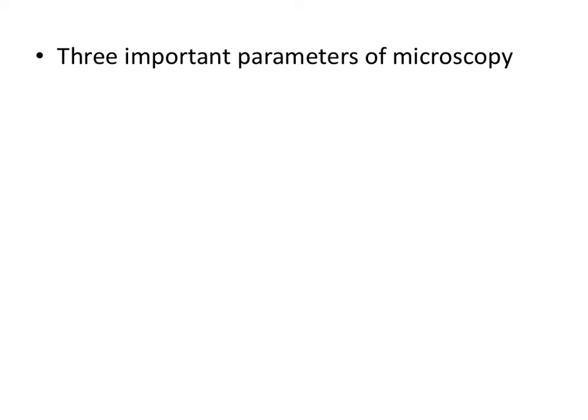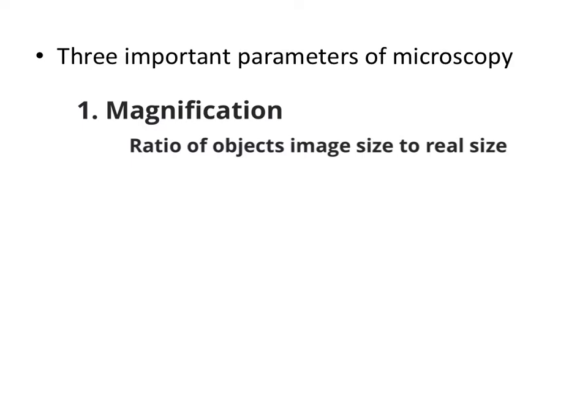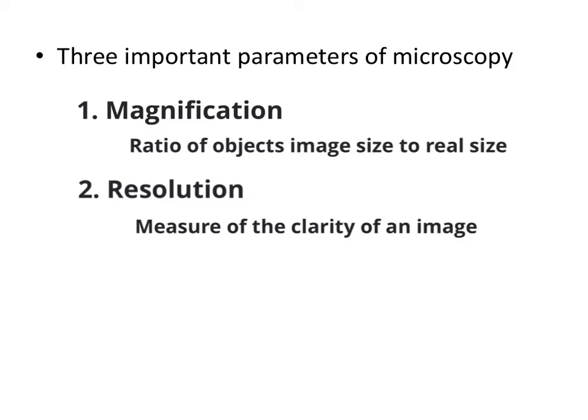There are three important parameters of microscopy. The first is magnification — the ratio of an object's image size to its real size. Different microscopes have different magnification capabilities depending on the objective lenses they include. Number two is resolution — the measure of the clarity of the image, or the minimum distance of two distinguishable points; the ability to see different objects from one another underneath the microscope. And thirdly is contrast, which is the visible differences in brightness between parts of the sample.